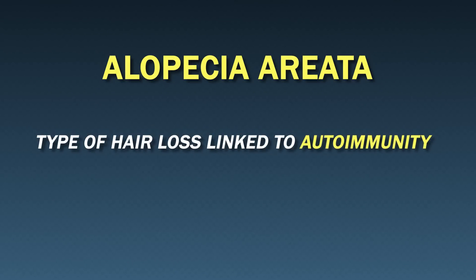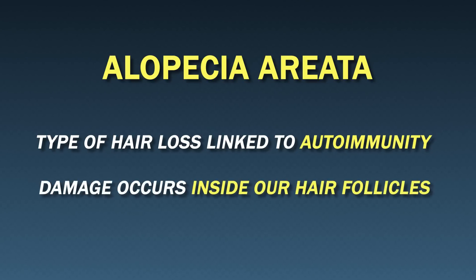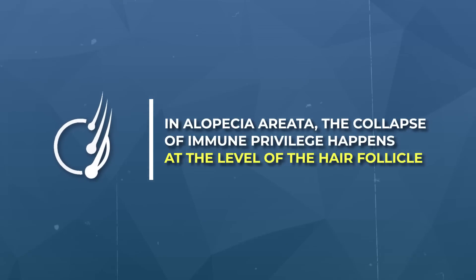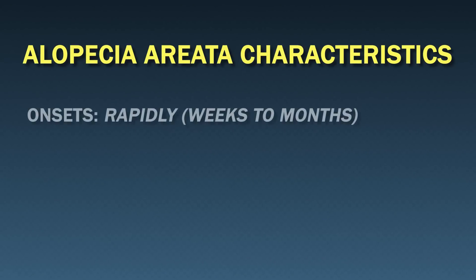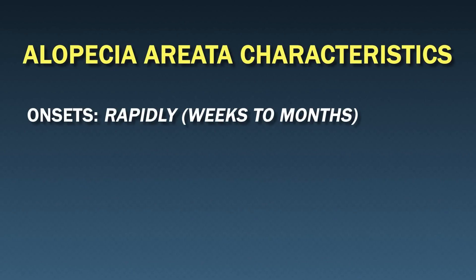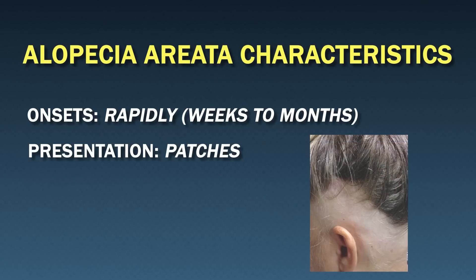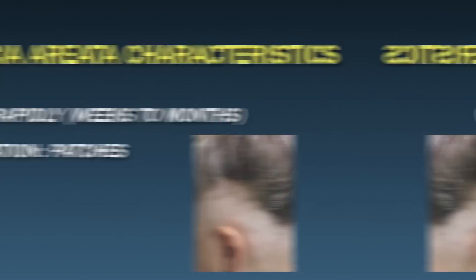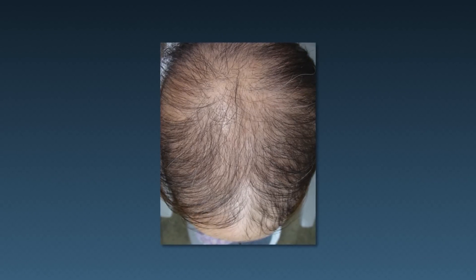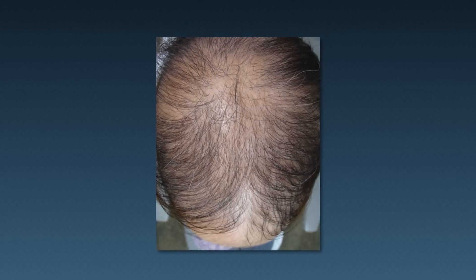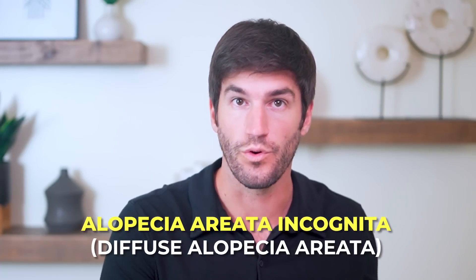The next type of hair loss is alopecia areata, a kind that affects 2% of people over a lifetime. It's linked to autoimmunity, where our immune system begins to confuse our own tissues as a threat and attacks them. In alopecia areata, this collapse of immune privilege happens at the level of the hair follicle, leading to hair loss. In many cases it onsets rapidly — in weeks to months — and typically occurs in random patches that look like little circles irregularly placed along the scalp. In some situations, it can also occur slowly and evenly distributed across the entire scalp, masking as diffuse thinning from androgenic alopecia. This is known as alopecia areata incognita, or diffuse alopecia areata.